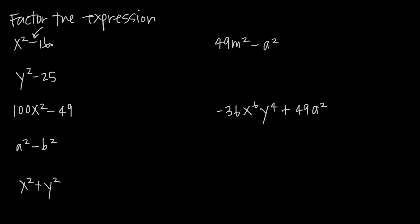All we do is take the square root of each of our perfect squares. Let's go ahead and draw our parentheses here. The square root of x squared — what do we have to multiply together to get x squared? That's just x and x, so we put those in place. Then the square root of 16 is 4, since 4 times 4 is 16, so we put our 4s in place, and then we just add one and subtract the other. If we multiply out these binomials, we're going to get x squared minus 16.